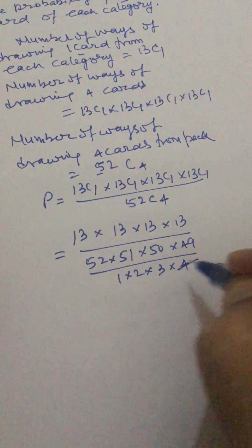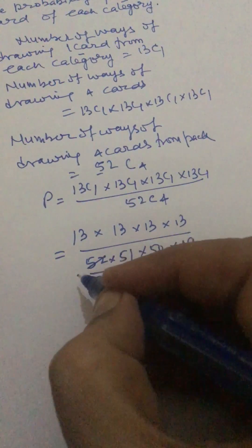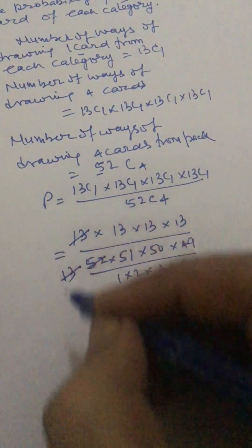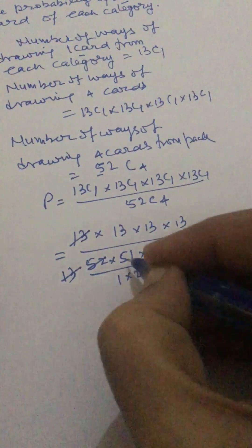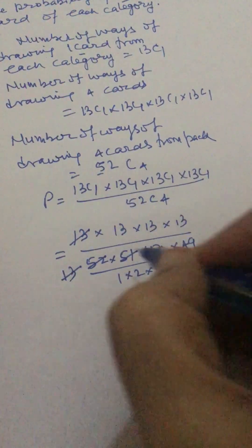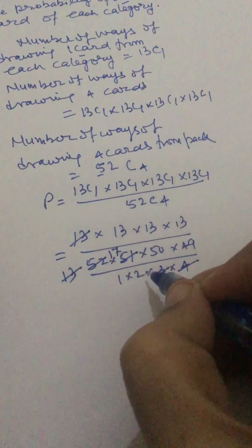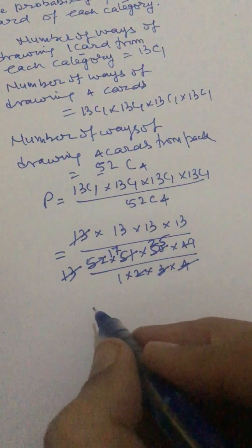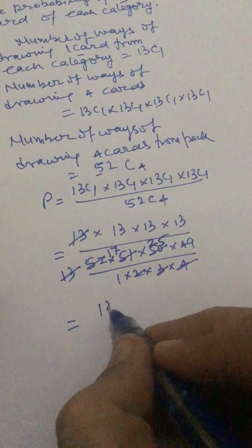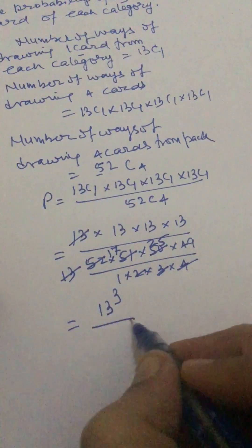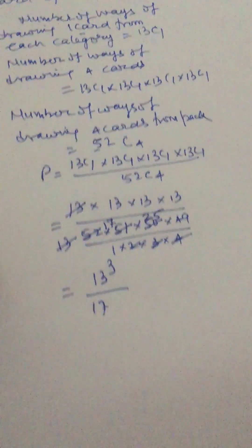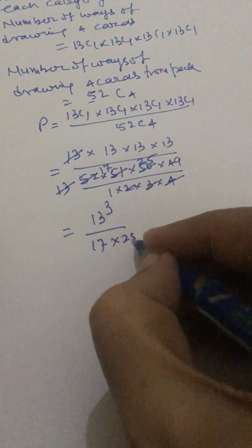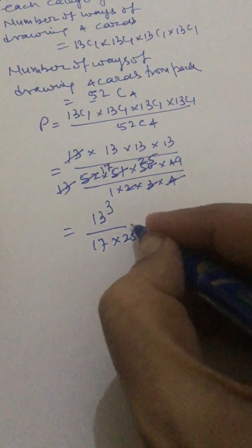We can cancel and divide. Cancel this 13. Now 51 divided by 3 gives 17 and 50 divided by 2 gives 25. So we can write 13 cube divided by 17 × 25 × 49.